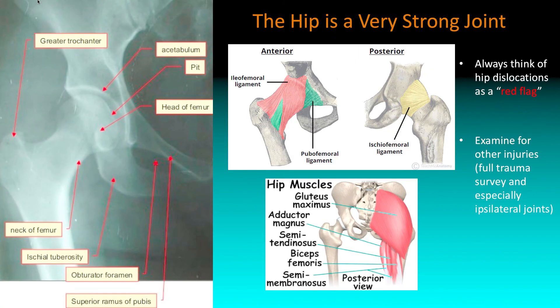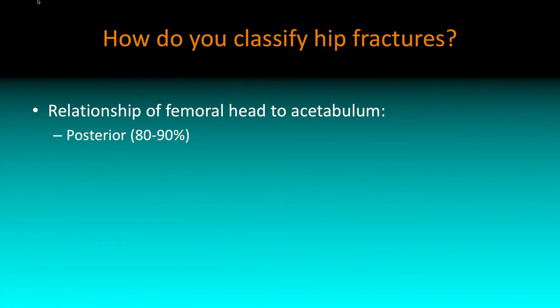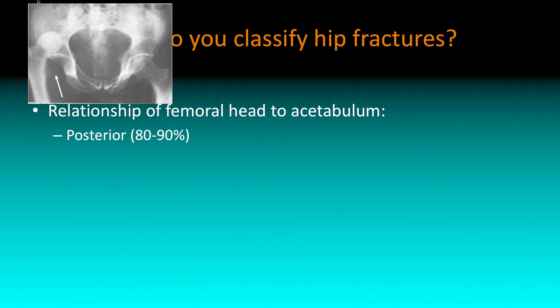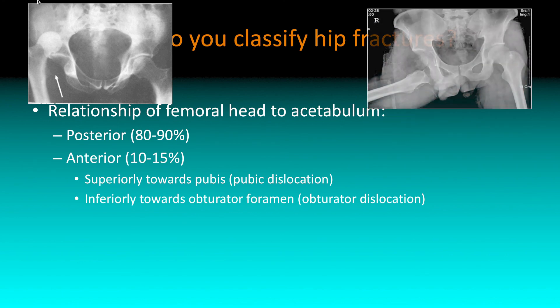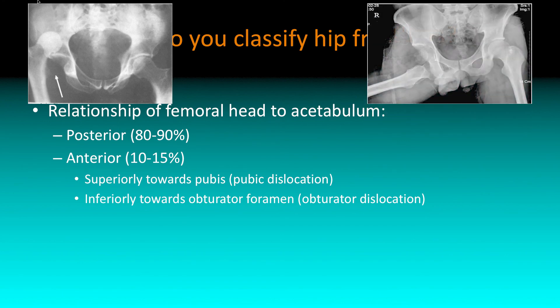Looking at the femoral head and the acetabulum on an x-ray, it's the relationship of the femoral head to the acetabulum. Posterior: the femoral head is pushed back out of its socket — most of the ones we're going to see are probably going to be posterior. You can have anterior, and they actually have two separate classifications: superiorly toward the pubis are called pubic dislocations, and inferiorly toward the obturator foramen are called obturator dislocations. But just for us, posterior and anterior.